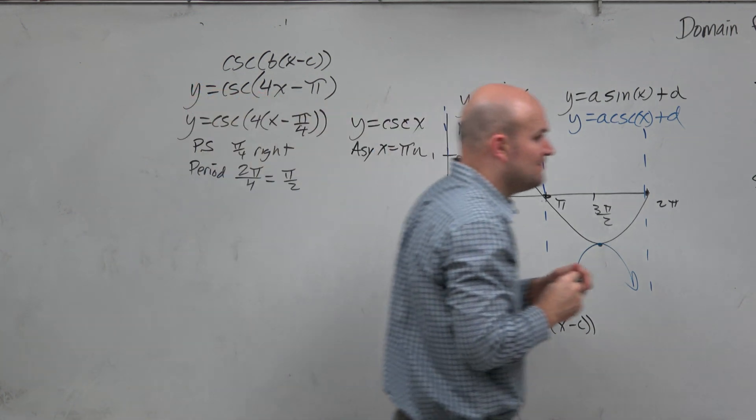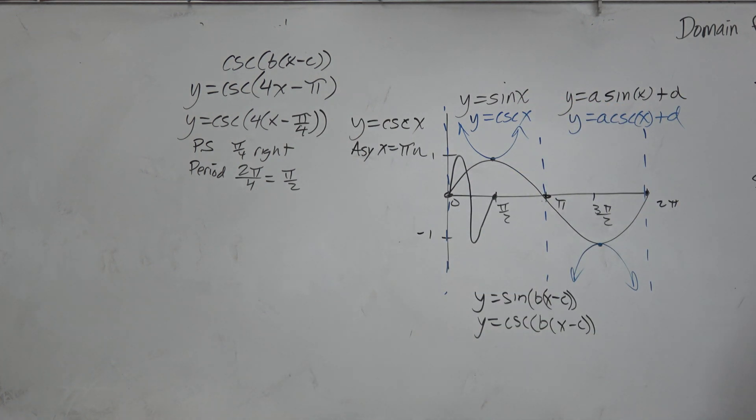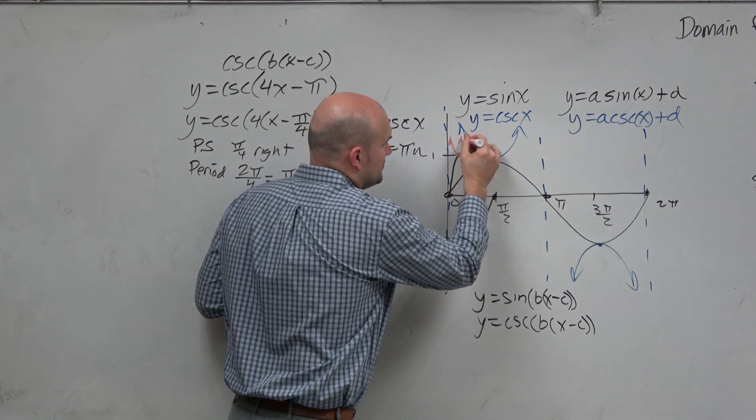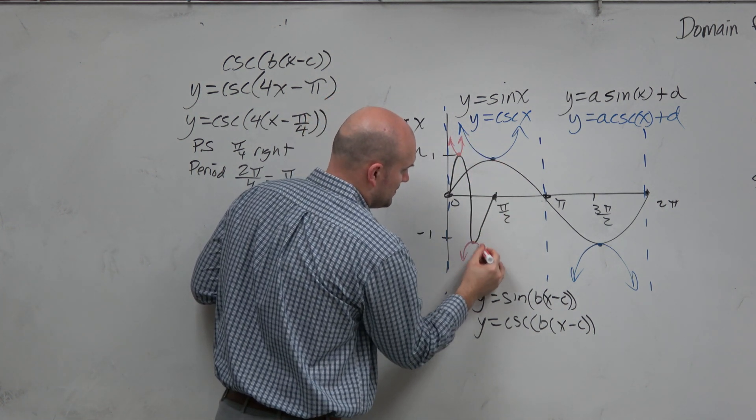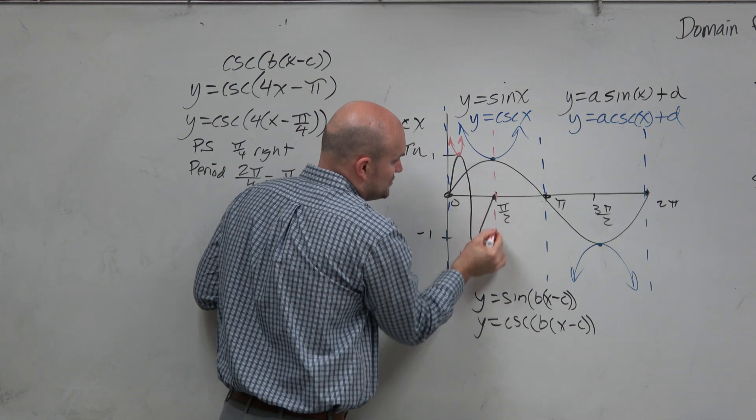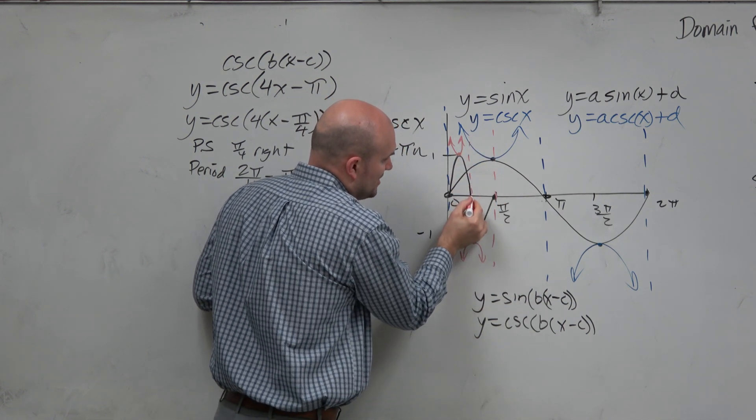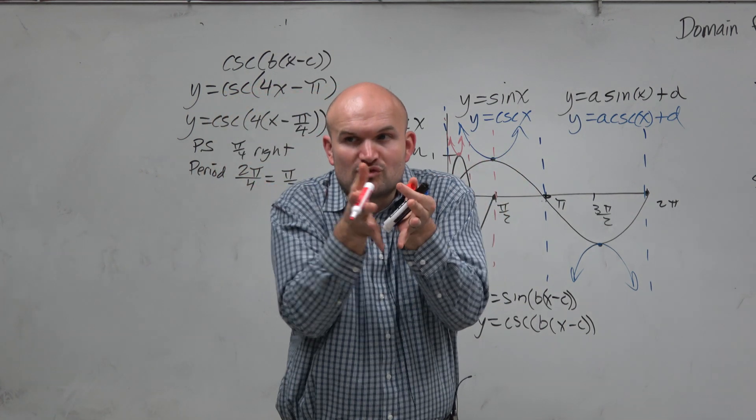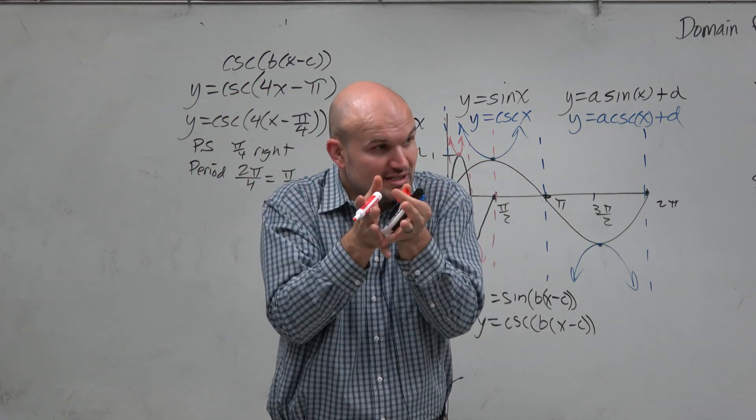Now, let's actually graph the cosecant function. You're going to have some reciprocal properties here. We're going to have an asymptote at pi halves. We have an asymptote here. And we still have an asymptote there.